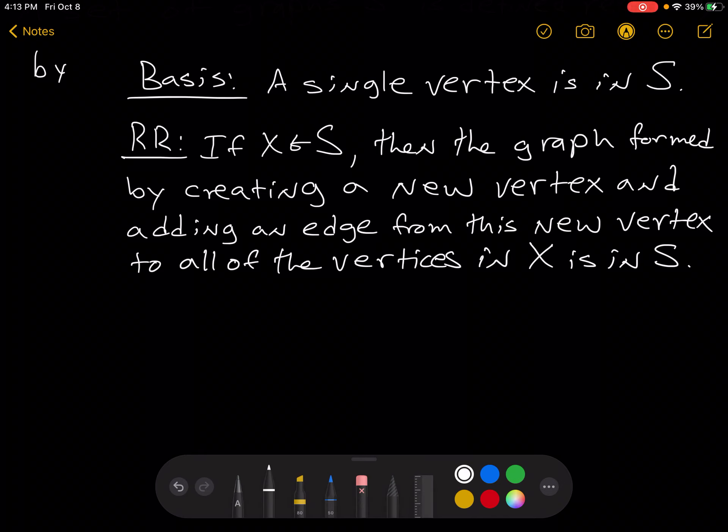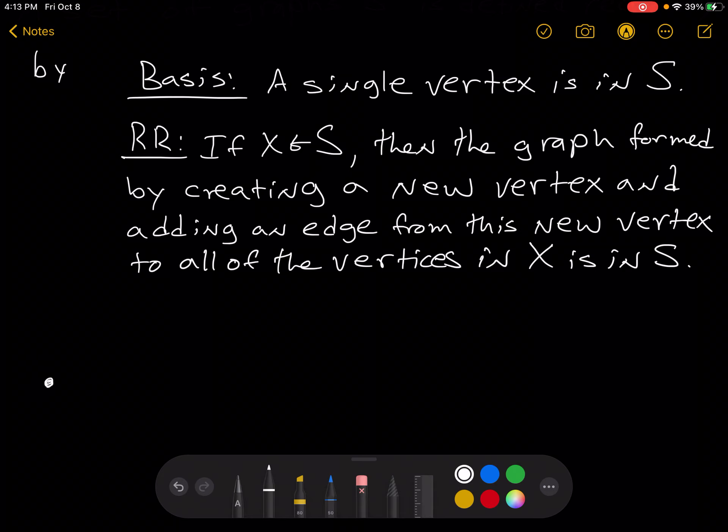So the basis tells us that a single vertex is in S. So this graph is in S. A single vertex is one of the graphs in S.